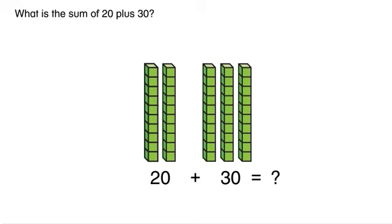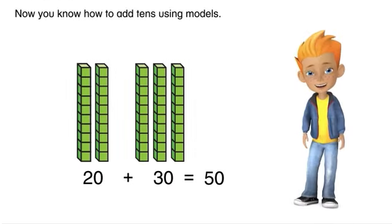20 is 2 tens and 30 is 3 tens. What is the sum of 20 plus 30?